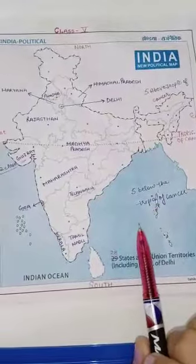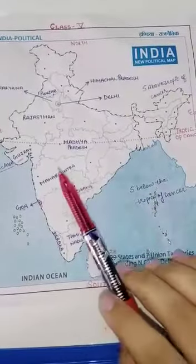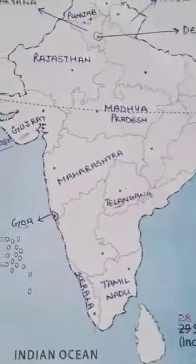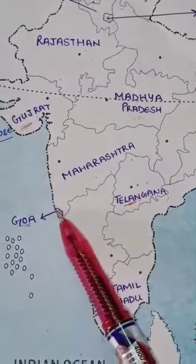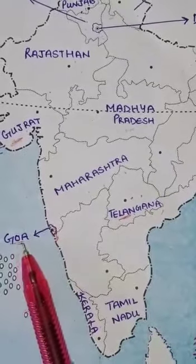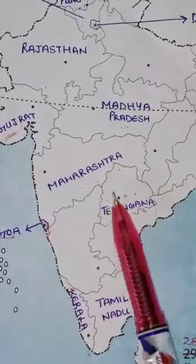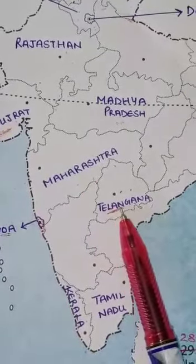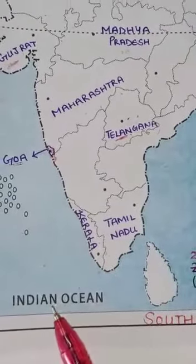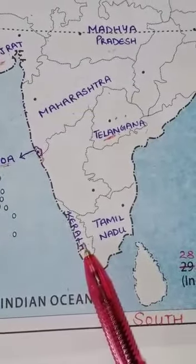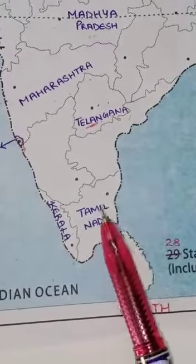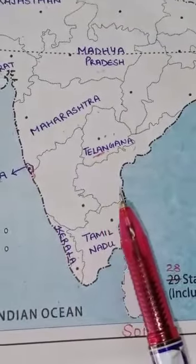Let's proceed down toward the south. This area is Maharashtra. Just below Maharashtra, draw a small area and mark it Goa. Below that, this boundary is Telangana. Now down toward near the Indian Ocean, the state is Kerala. Just to the right side of Kerala is Tamil Nadu. This covers our second part.